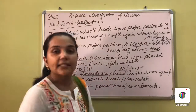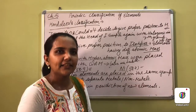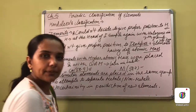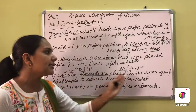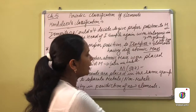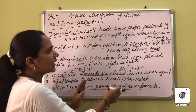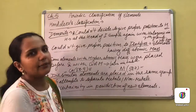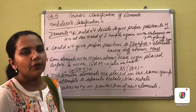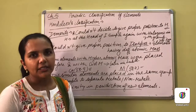Furthermore, dissimilar elements were placed in the same group - elements whose chemical properties did not match each other were grouped together simply because of their atomic mass. Also, no attempt was made to separate metals from non-metals. There was also uncertainty in the prediction of new elements. Due to all these shortcomings, this table was rejected, and the last table we will study is the Modern Periodic Table, based on Modern Periodic Law, which we follow to this day.